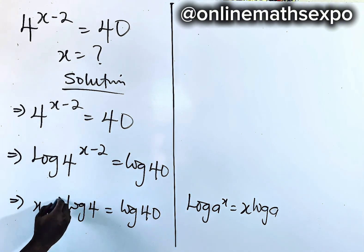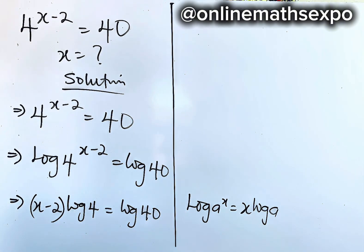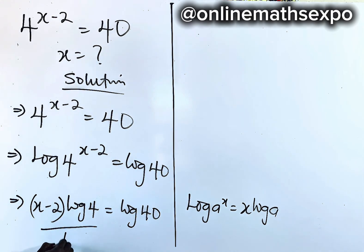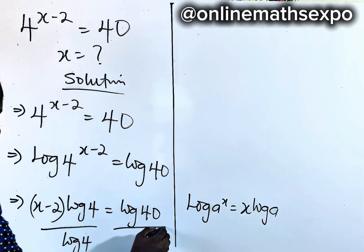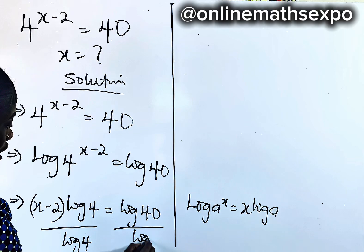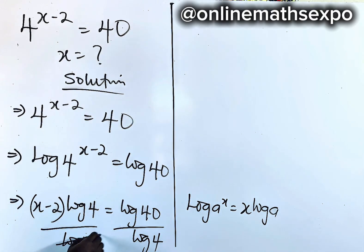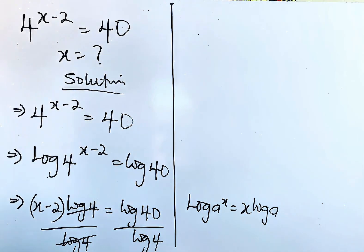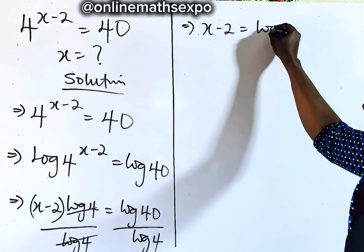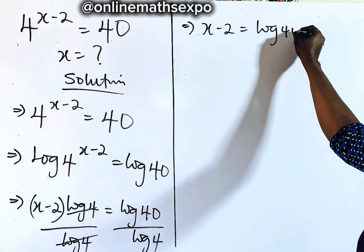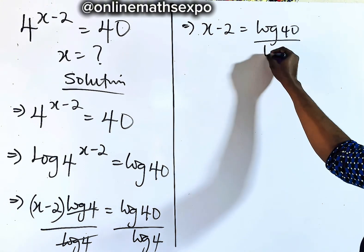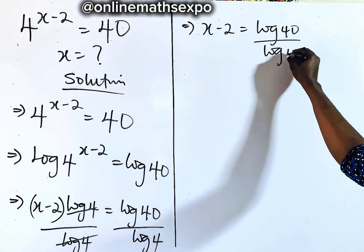Now what do you do? Remember these two are together. What you need to do is to clear this, so we divide by log of 4, and we also divide the right side by log of 4. This cancels, and we have x minus 2 is equal to log of 40 divided by log of 4.